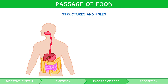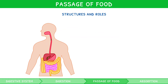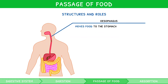Let's go through each of the structures and their role in detail. In the mouth, teeth and the action of chewing cause mechanical digestion of food. In addition, chemical digestion of starch begins as food is mixed with saliva that contains amylase. The bolus of food then enters the esophagus, where it moves to the stomach using contraction of the muscular walls, known as peristalsis.